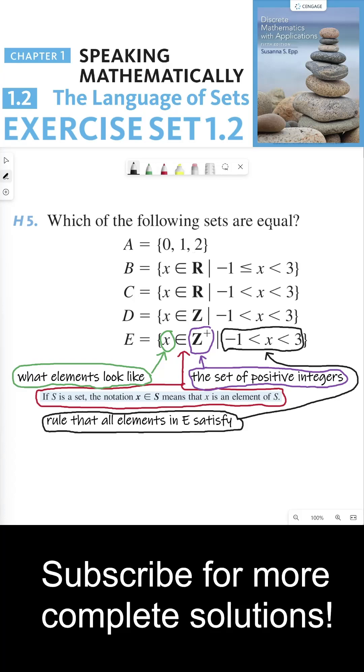So which of the following sets are equal, meaning that their elements are the same? If you noticed, set B, C, D, and E are written in set builder notation.